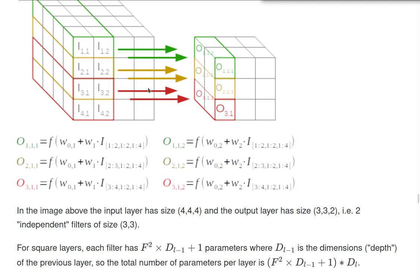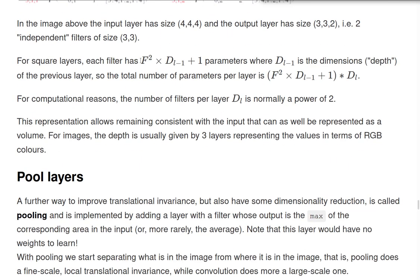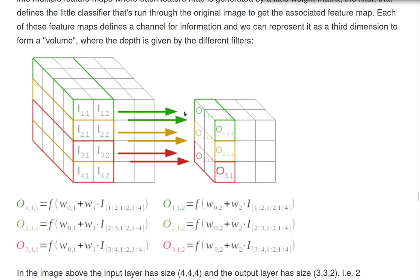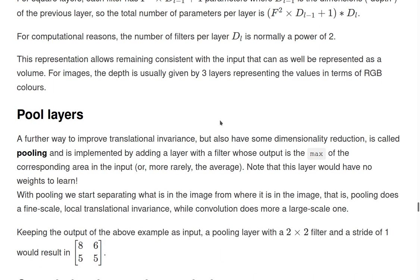Each filter will have 2 by 2 by 4 plus one bias. The bias is only one, not four. A total of 4 by 2 by 2 plus 1 equals 17. We have two filters, so 17 by 2 equals 34 weights. We can achieve all this with just 34 weights. Here is the formula. Normally the number of filters for computational reasons is a power of two, for optimizing the libraries.